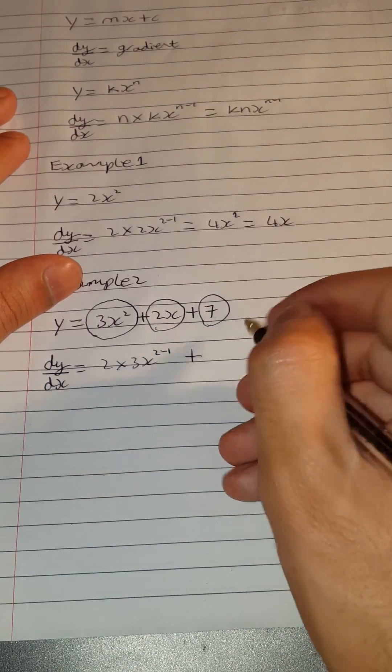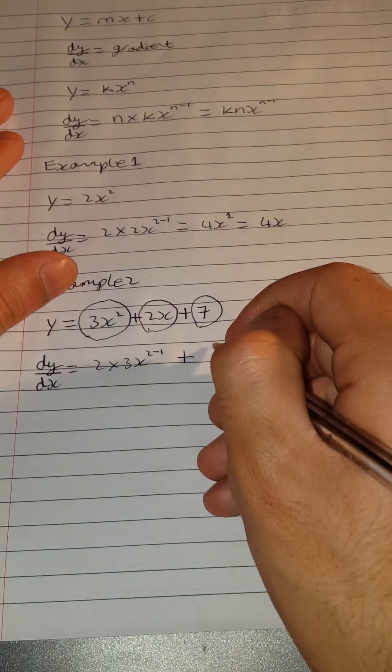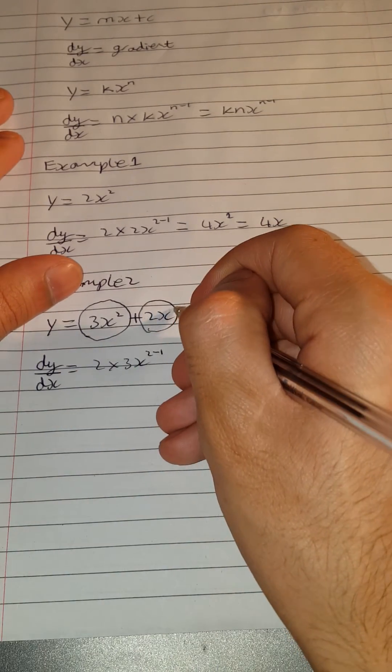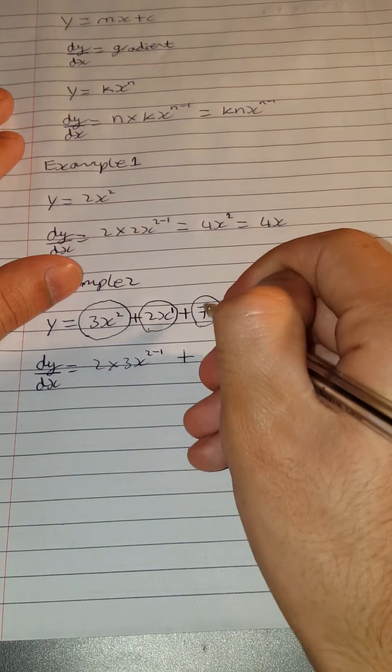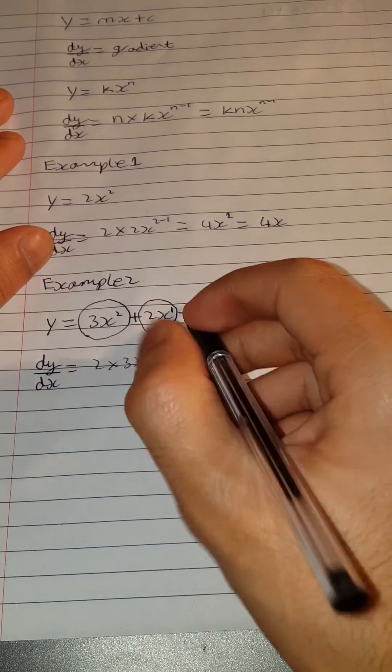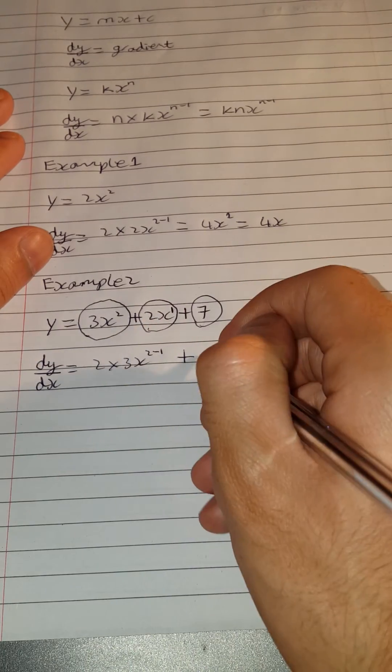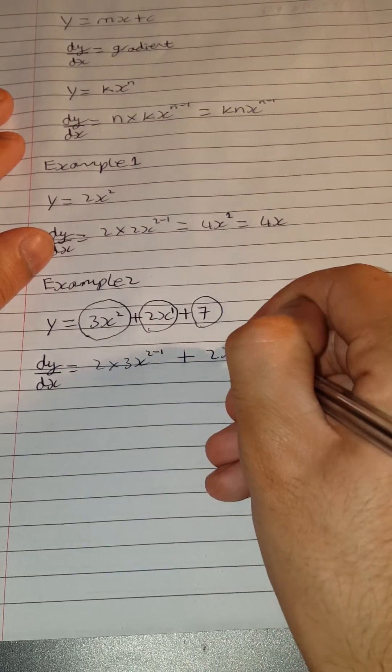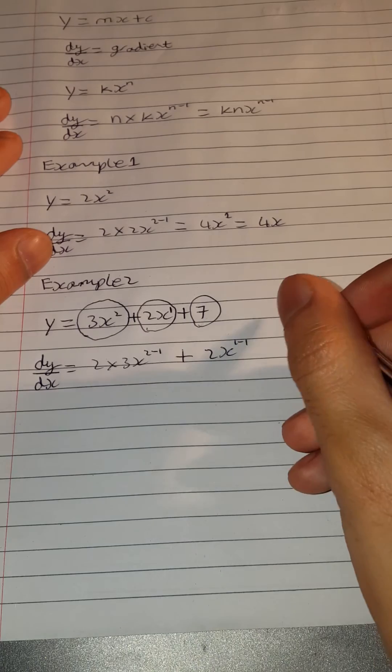Now what do we do to the 2x? You need to look carefully. We have 2x to the 1 technically, but we don't write the 1 normally. So now it just becomes, we multiply by the 1, which is just 2. So 2x to the 1 minus 1. And now there's a 7. There's no x next to it.